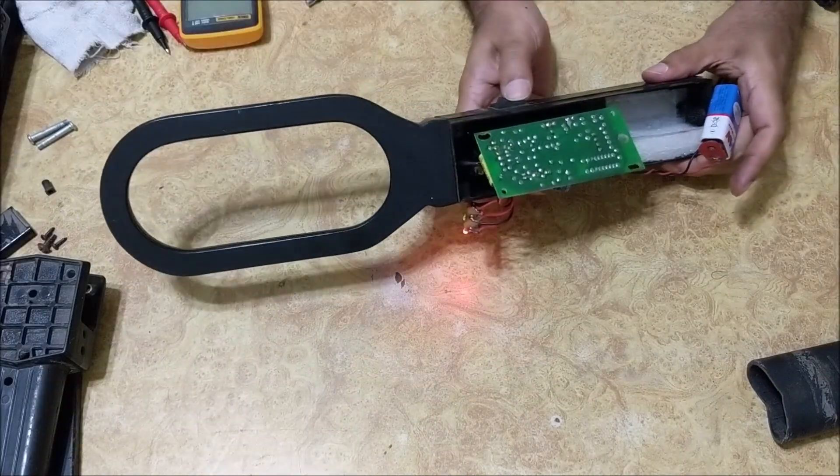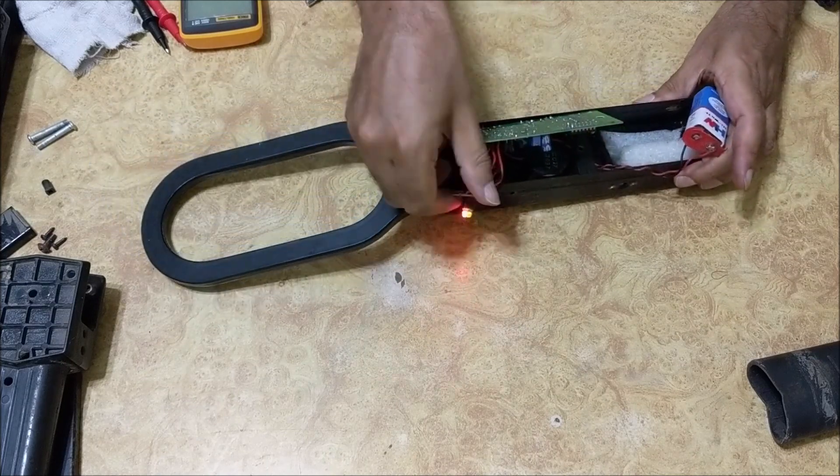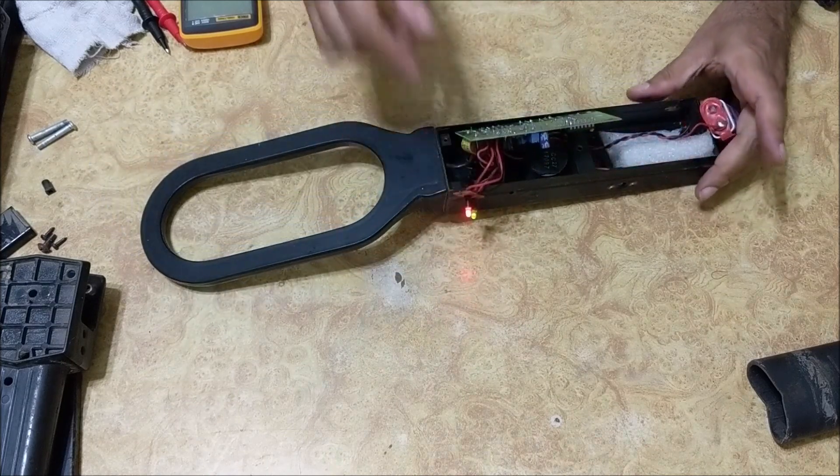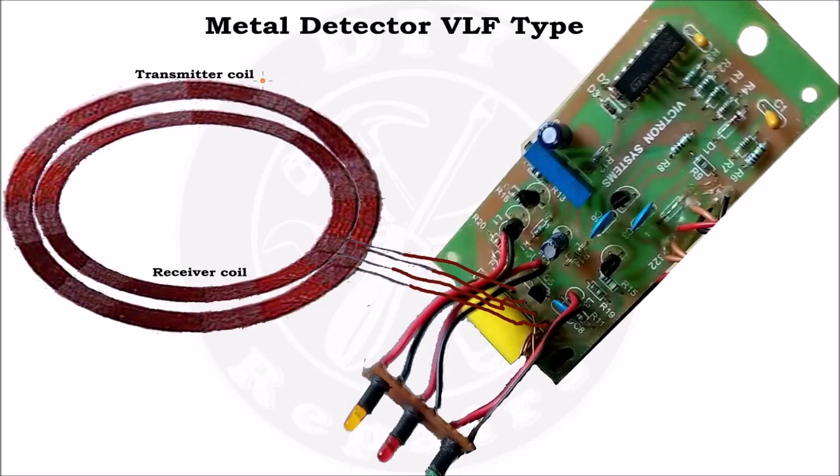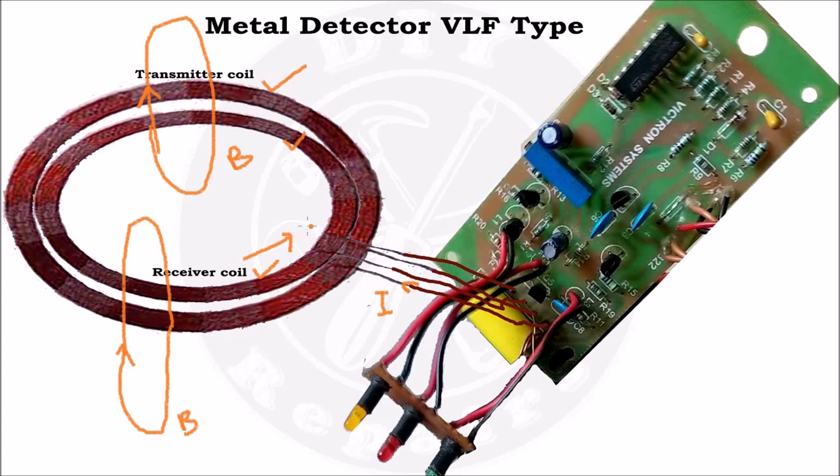Before repairing this metal detector that is constantly beeping, let's look at the working principle and circuit diagram of a very low frequency metal detector. It operates using two distinct coils, a transmitter coil and receiver coil. A time varying current generated by the circuit is fed to the transmitter coil, which generates a low frequency magnetic field. This magnetic field also induces an electric current in the receiver coil.